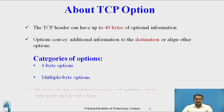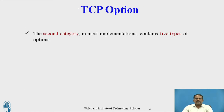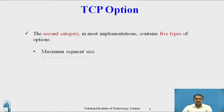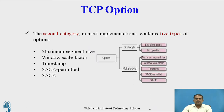The first category — one-byte options — contains two types: end of option list and no operation. The second category, multi-byte options, in most implementations contains five types: maximum segment size, window scale factor, timestamp, selective acknowledgement permitted (SACK permitted), and SACK.